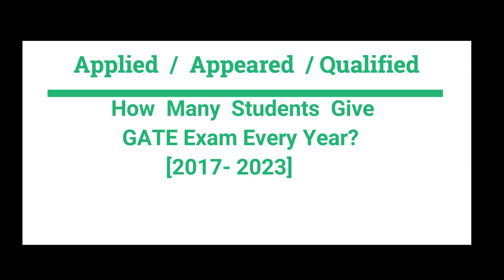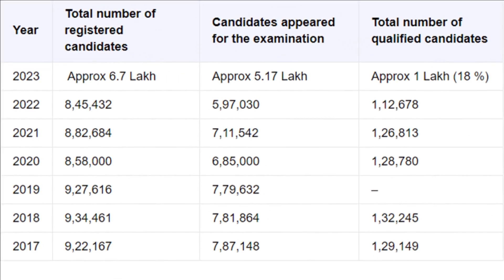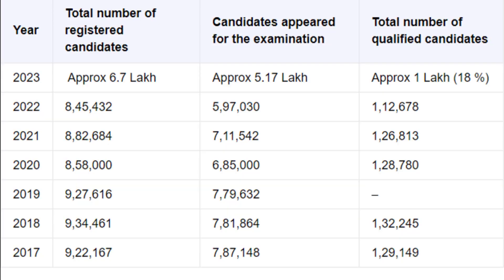Looking at the data in this table, you can see the total number of candidates, those who appeared, and the number who qualified. Overall, approximately 18% of candidates qualify in the GATE examination each year. Year-wise data is mentioned in the table — around one lakh to 1.5 lakh candidates appear and roughly 18% qualify.